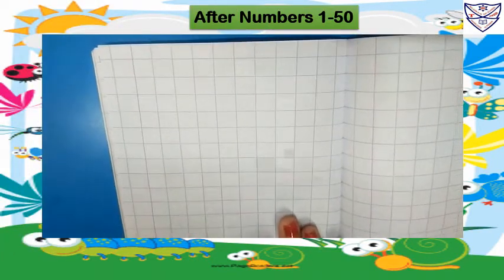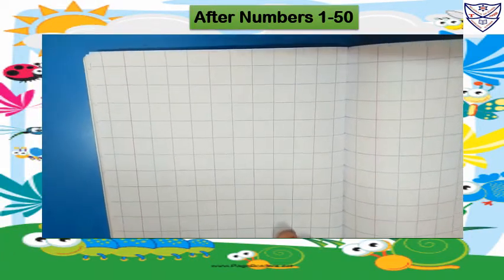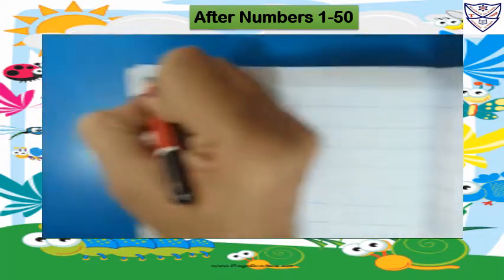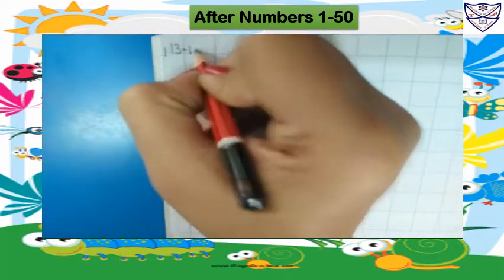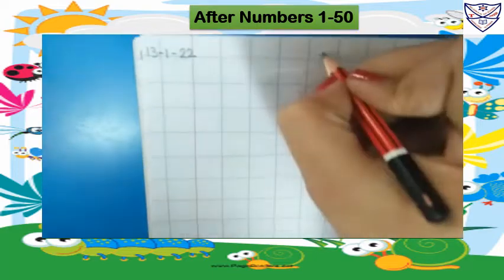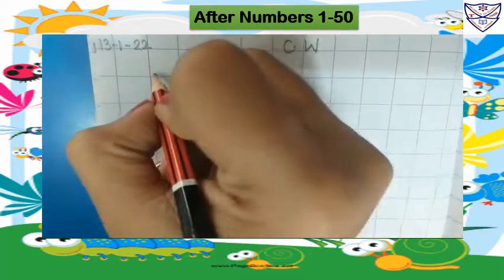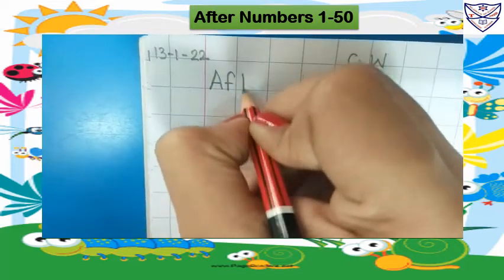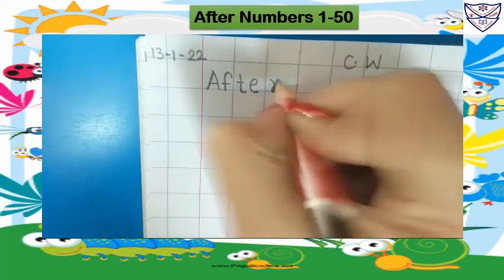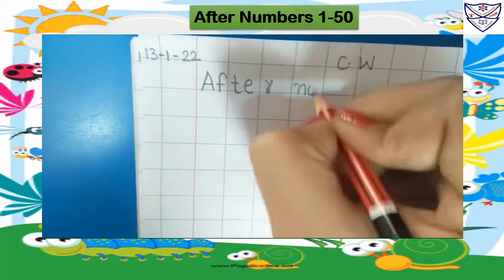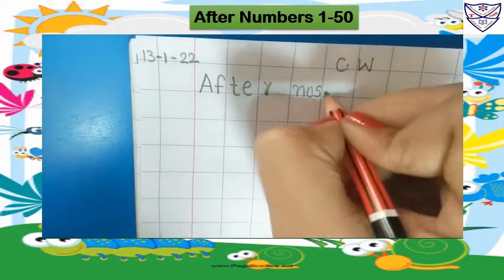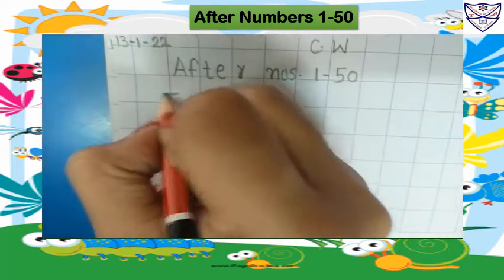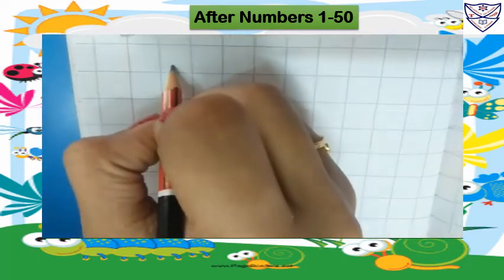Today we will write 'After Numbers 1 to 50' in the square line notebook. Write here today's date, that is 13-1-22. Write here 'classwork'. In the next line we will write the heading: 'After Numbers, numbers 1 to 50.' Now leave one line and we will start from here.